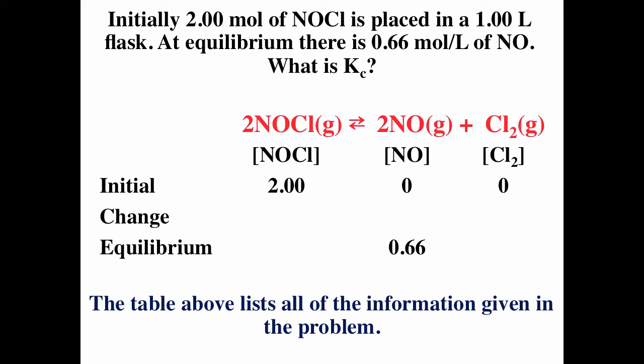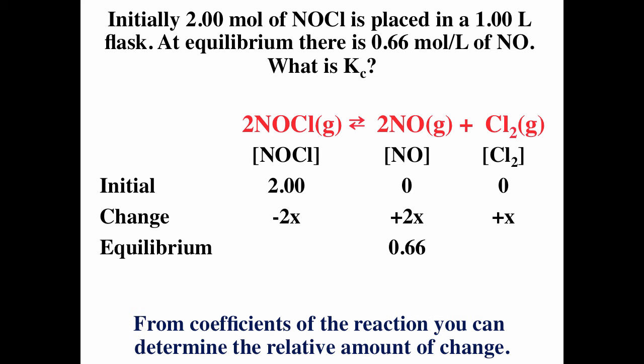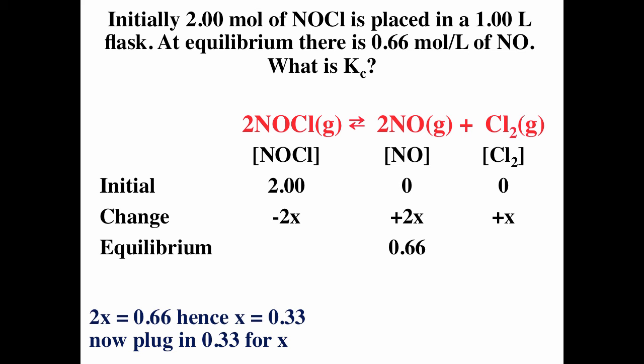The change row shows how much each species changes. If 2x of the NOCl reacts, you form 2x of the NO and x of the Cl₂. We have negative signs in front of the reactants and positive signs in front of the products; the coefficients come down in front of the x's. Equilibrium equals initial plus change, so 2x equals 0.66.